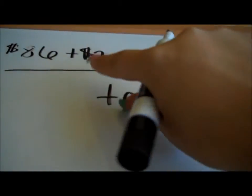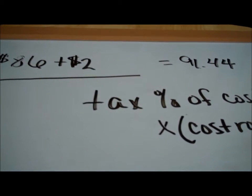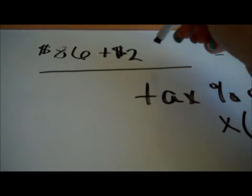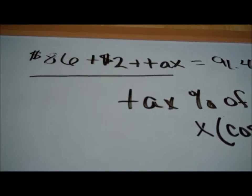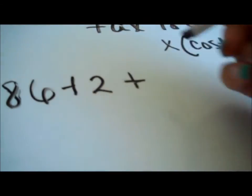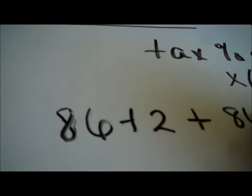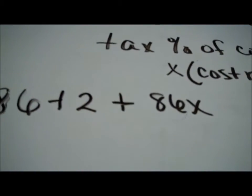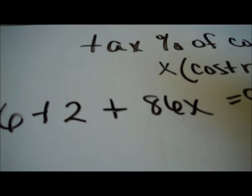If I have $86 plus $2, that's not going to give us $91.44, so the tax has to be added on to the bill. So we're going to have $86 plus $2 plus x times 86, or written as 86x — the number goes first and the variable goes second. That gives us $91.44.